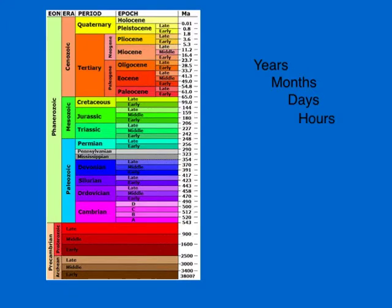Scientists divide this time into four divisions. The first division is called an eon. Then eons are divided up into eras, then eras into periods, and periods into epochs. Each of those is a smaller section of time, just like we divide the year up into months, then a smaller section of days, and then a smaller section of hours.